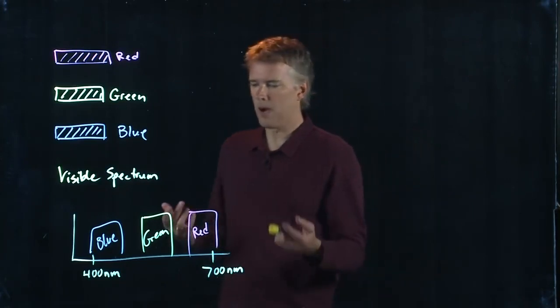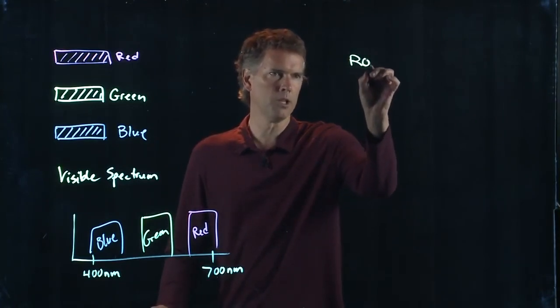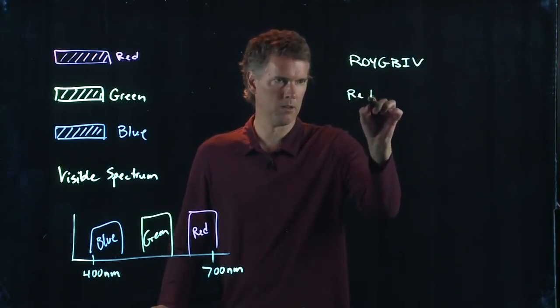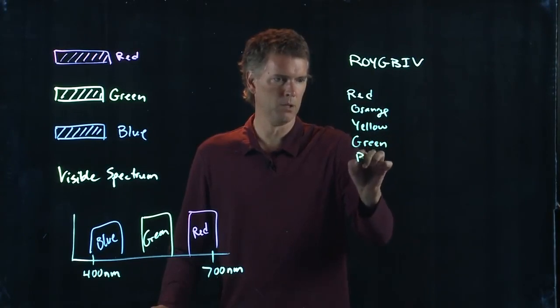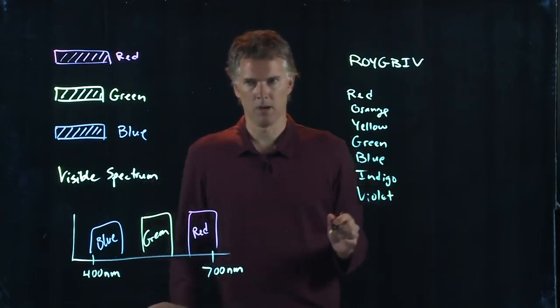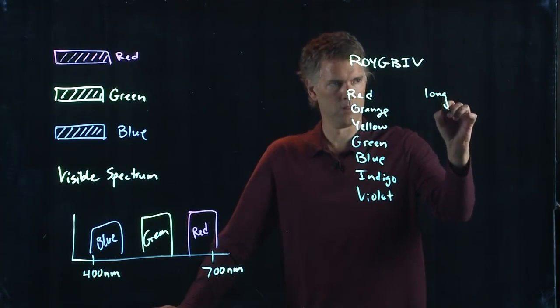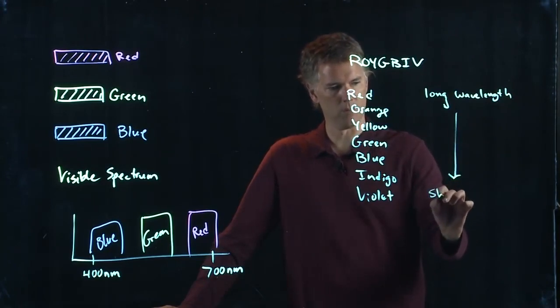When you think about all the colors in the rainbow, one of the things they taught you was Roy G Biv, right? What does that mean? Red, orange, yellow, green, blue, indigo, and violet. Red is long wavelength and violet is short wavelength.